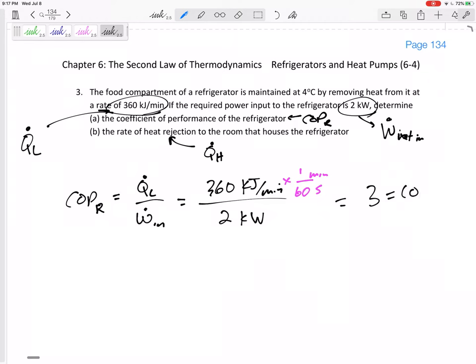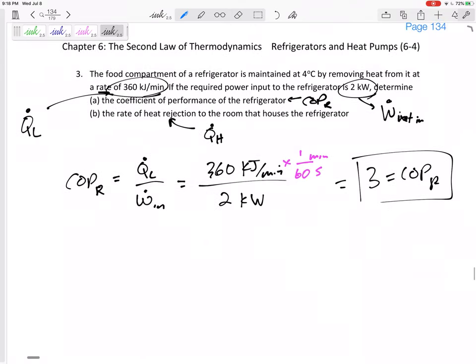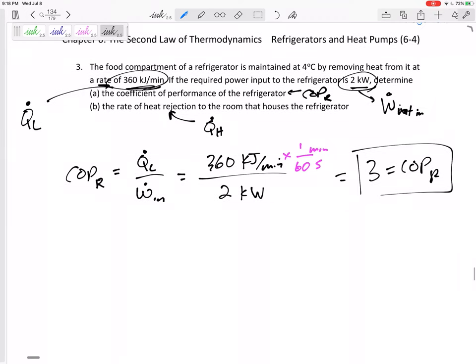So 6 over 2. This would be 3 is the coefficient of performance of this refrigerator that is removing Q_L at a rate of 360 kilojoules per minute, and it's taking a power in of 2 kilowatts.